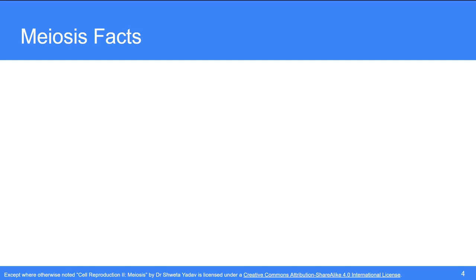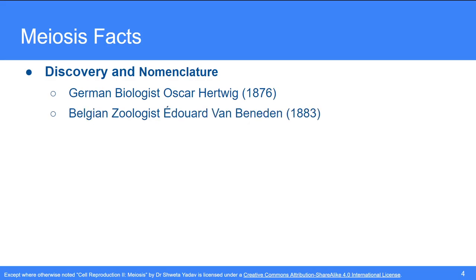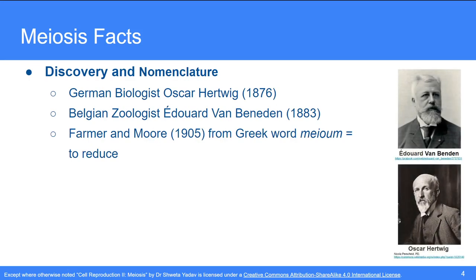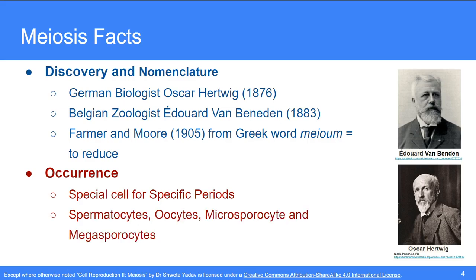Meiosis was first discovered and described by German biologist Oskar Hertwig in 1876. It was then described by Belgian zoologist Edward van Beneden in 1883 at the chromosomal level. The term meiosis was coined by Farmer and Moore in 1905 from the Greek word meaning 'to reduce'. Meiosis occurs only in special cells including spermatocytes, oocytes, microsporocytes, and megasporocytes, and only in diploid cells, not haploid ones.